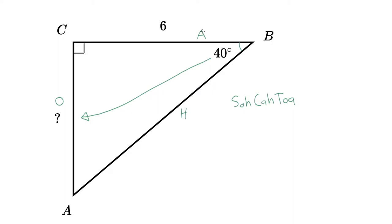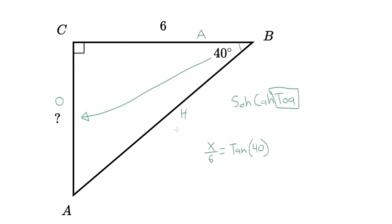You can see that adjacent and opposite are the information we're given. Since there's nothing written on side BA, we're not going to use the hypotenuse. So what function has A and O in it? It's going to be TOA — tangent has an O and an A. So we write opposite over adjacent: X over 6 equals the tangent of 40. X represents side AC.